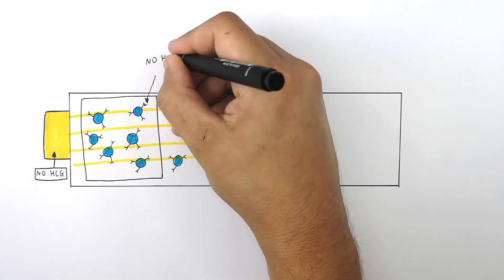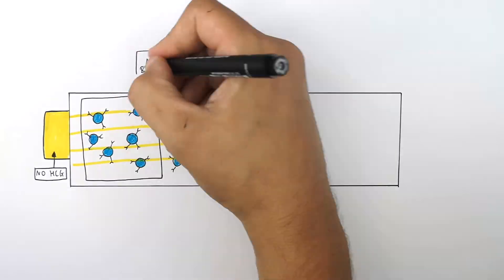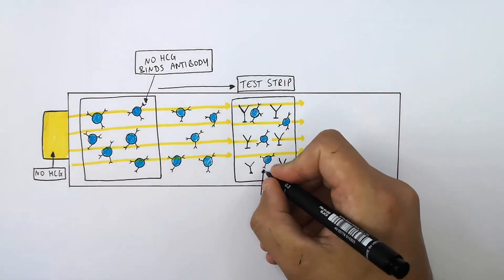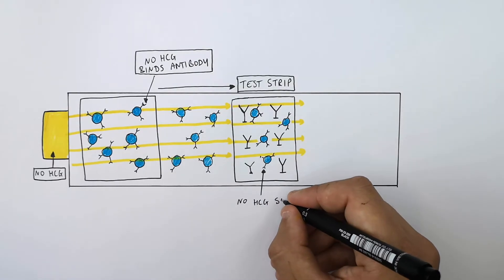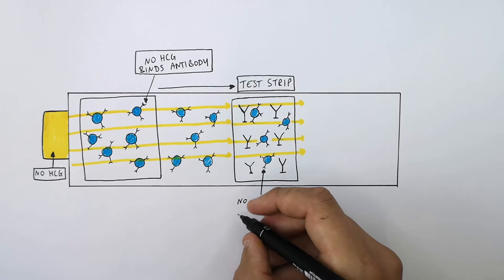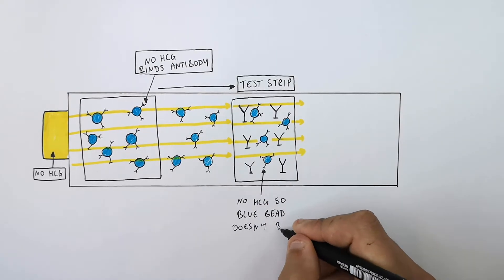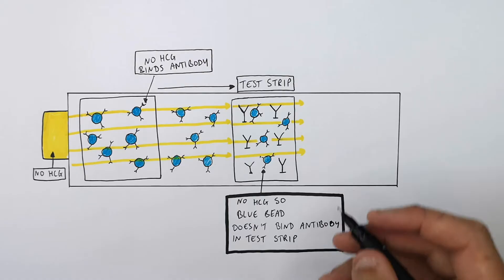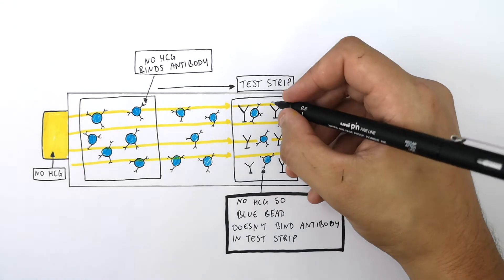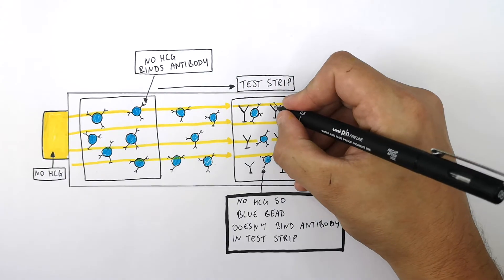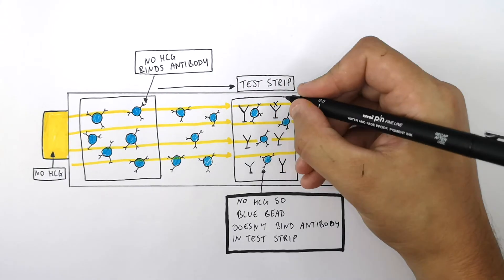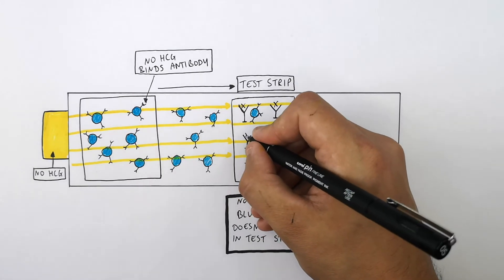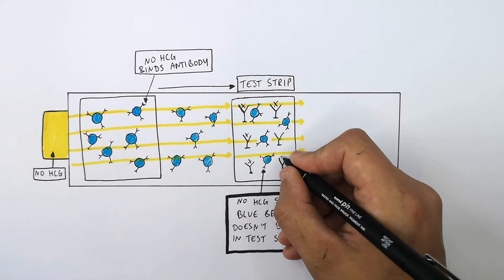Because there's no HCG bound to the antibodies on the blue beads, the blue beads don't bind the antibody in the test strip. So the test strip does not turn blue — there is no binding of HCG-attached blue beads to the stationary antibodies stuck down in the test strip. It remains colourless.